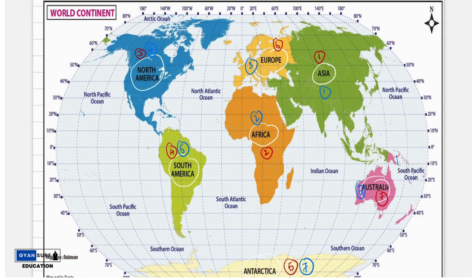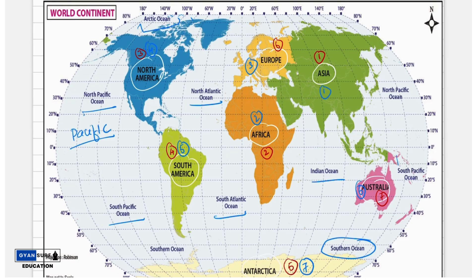Now if we look into the oceans, the largest ocean is the Pacific. Then comes the Atlantic Ocean. The third is the Indian Ocean. The fourth is the Southern Ocean. And the fifth is the Arctic Ocean.